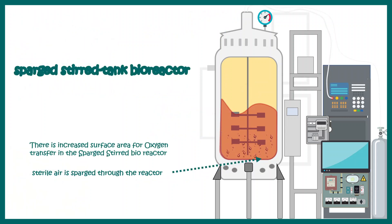Now let's talk about the sparged stirred tank bioreactor, which is a bit different from the normal stirred tank bioreactor. Here, sterile air is purged into the reactor. This increases the surface area for oxygen transfer, which is really helpful. The bubbling process actually increases the oxygen transfer area and helps in the yield.